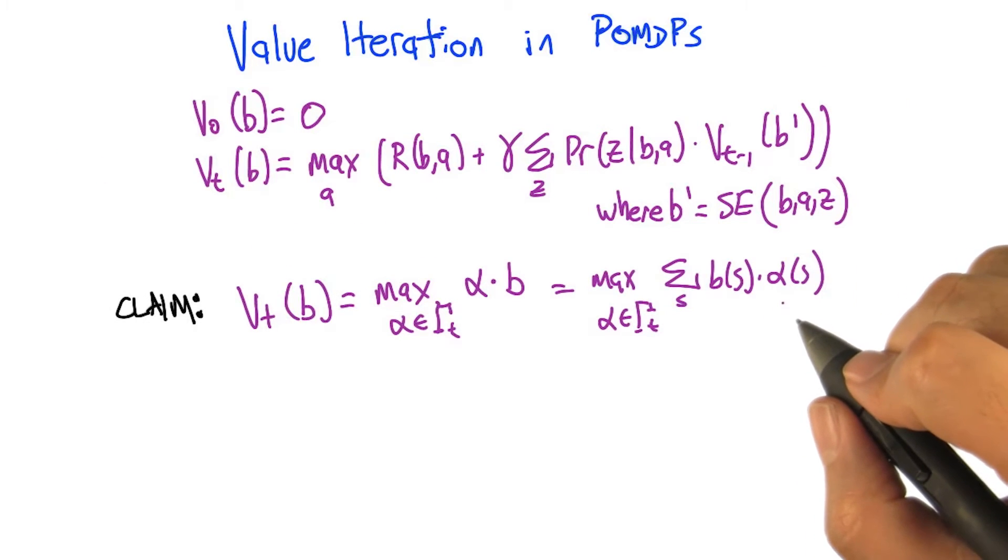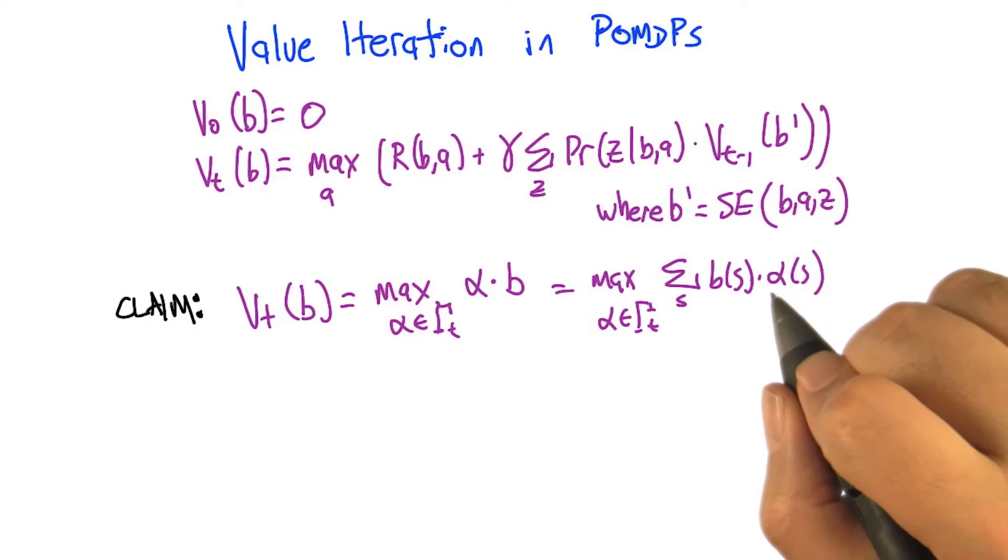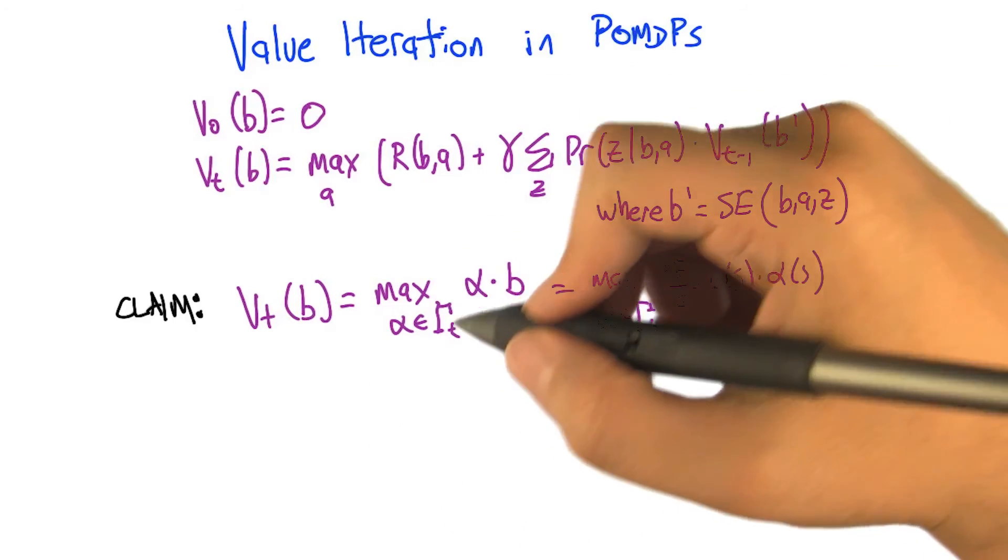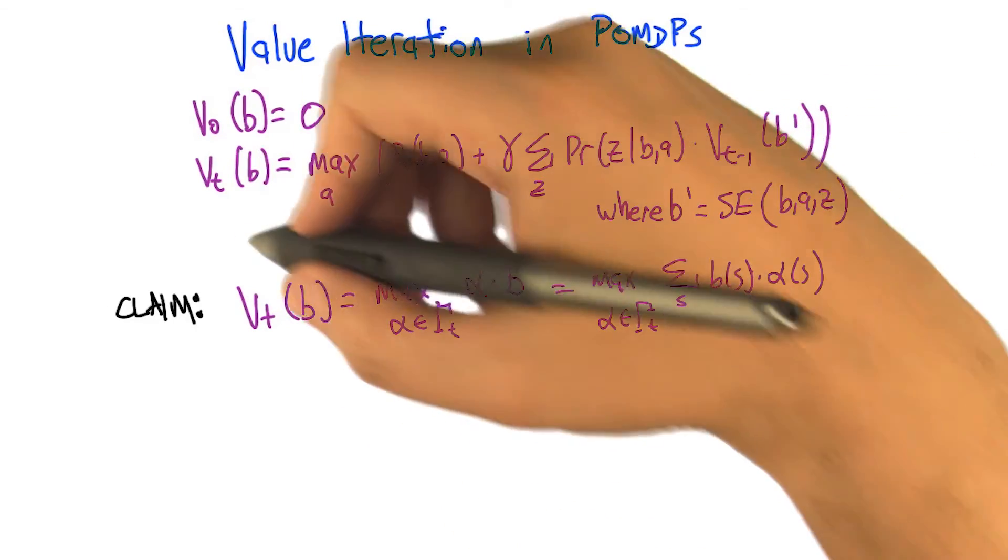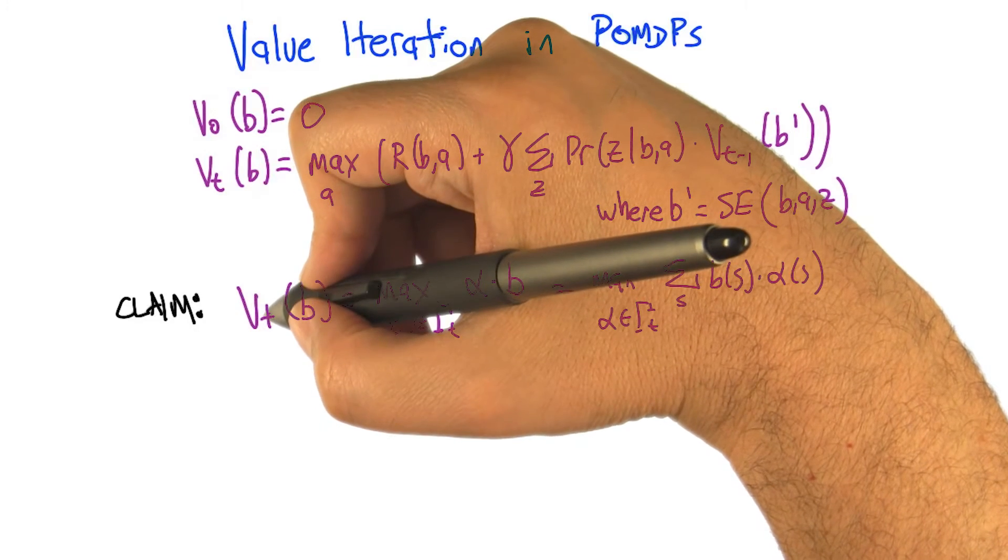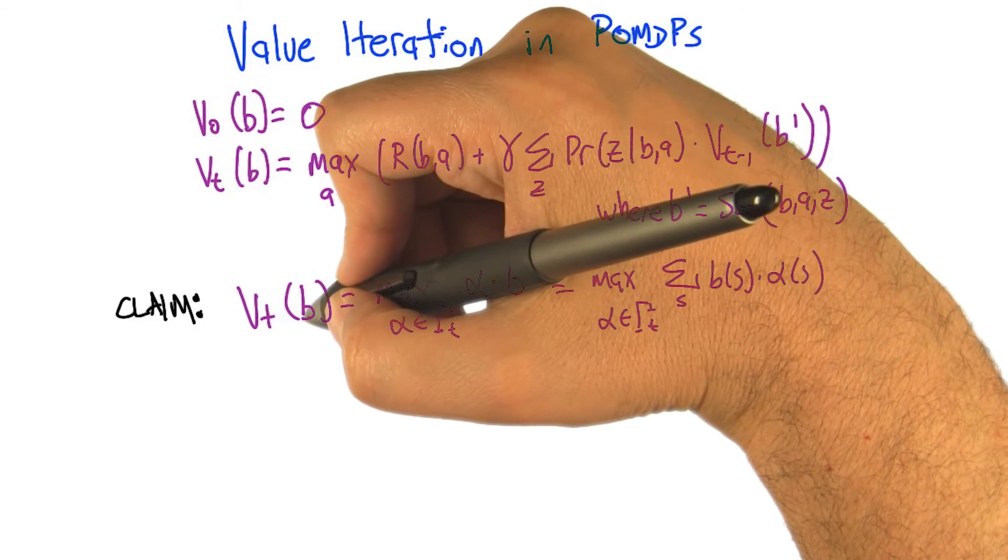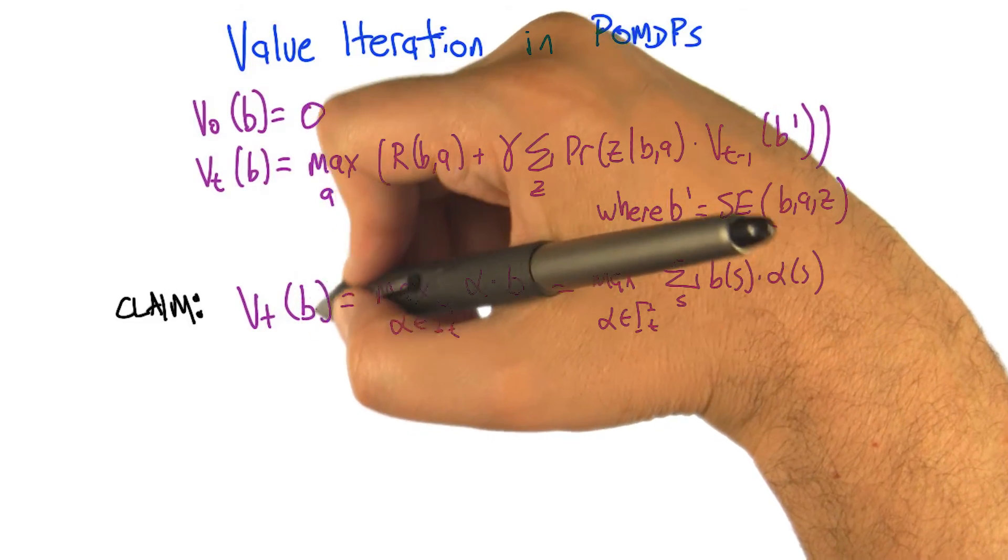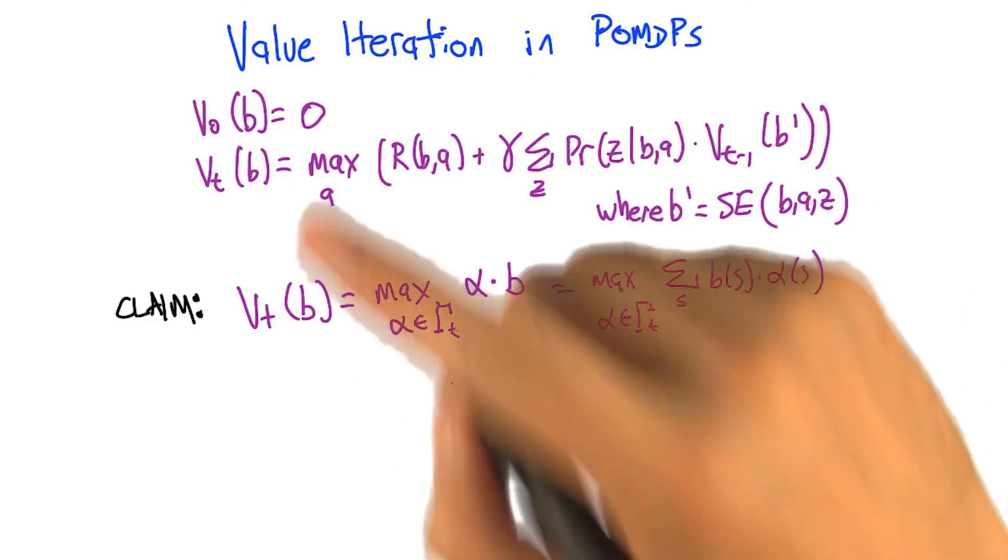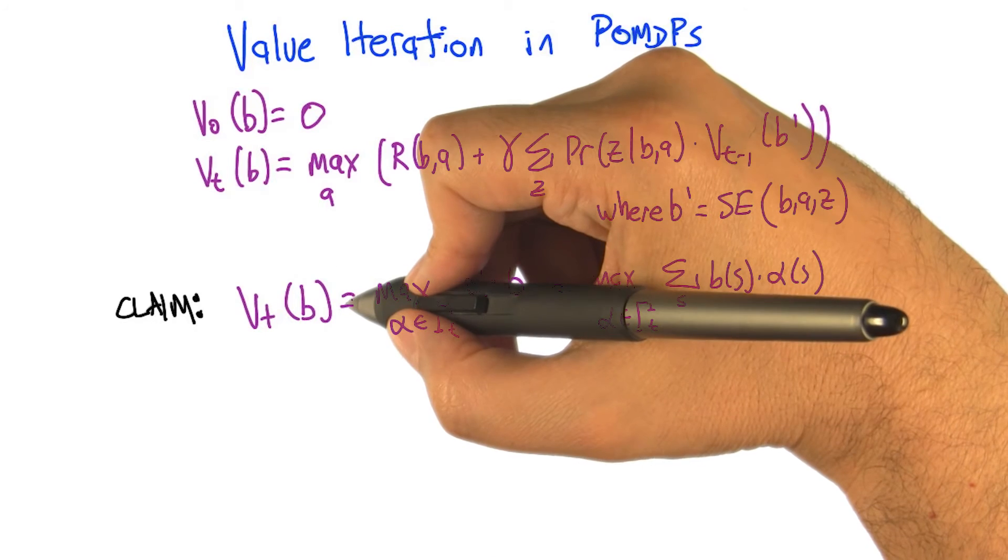This is how we're going to jump from the infinite to the finite, we're going to make a claim. And the claim goes like this: that for all t, the value function at time t over all belief states b, over the infinite set of possible belief states, can be written in a finite way.